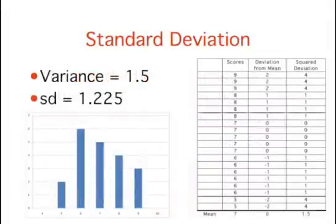Going back to our earlier test score distribution, if you take the square root of the variance of 1.5, you get a standard deviation of 1.225.